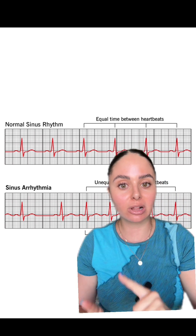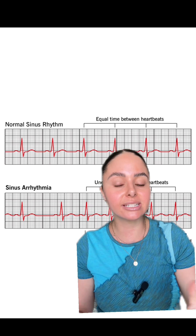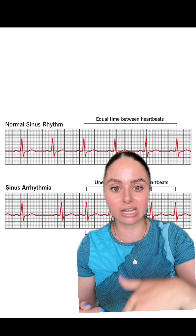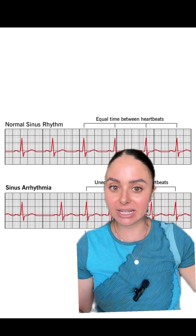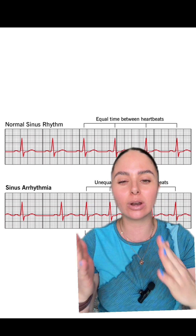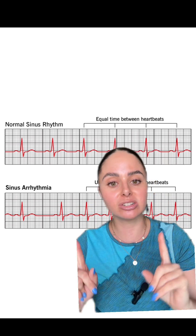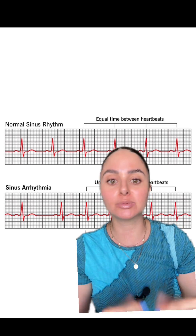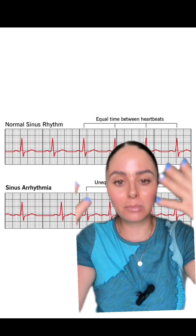Sinus arrhythmias typically correlate with the respiratory system. When you take a deep breath in, your heart rate speeds up a little bit, and when you breathe out, it slows down. Sinus arrhythmias are definitely more common in kids than adults, but you can see them in adults as well.